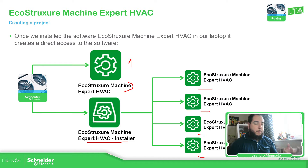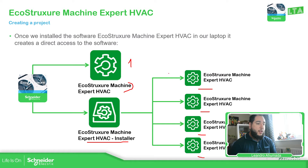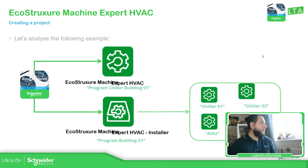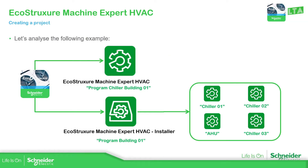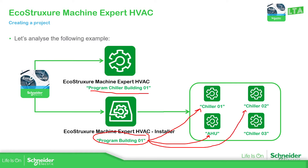If you want to use, for example, a PLC with a display color and have another PLC in the same building, probably in that case I would rather use the installer. For example, I have the program for a chiller in building 01. And in this one, I create a program for the complete building — inside the building I have chiller one, another chiller, and another chiller. So I open the project and then inside, I can open individually projects that are linked to the same building or site. That's the idea.